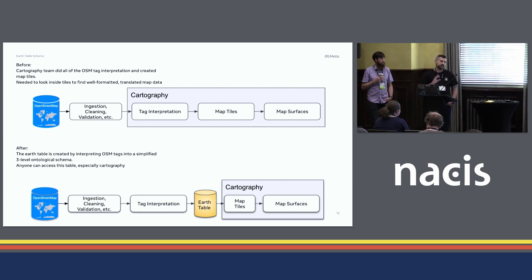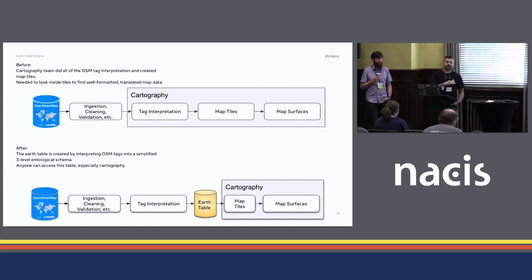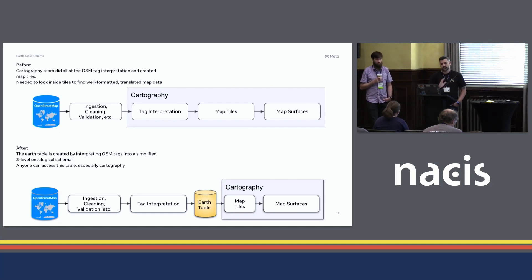We build that into map tiles and that gets displayed to all the different Meta products. Basically, what we did with the Earth Table said: we've spent three years building this global base map — what if we just took all this logic and pushed that down to a table that everyone could just access? A lot of people were already accessing our tiling tables to get the simplified logic. So we just said, let's make that the Earth Table. We can socialize that within the org as the best way to get data, and then we just ingest the Earth Table and apply min-zooms and labeling logic in our tiling pipelines.